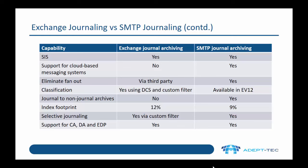One of the issues with exchange journal archiving is that you get something called fanout, where you get duplicate emails because emails are being sent from multiple mailbox servers. Because of the architecture of SMTP journal archiving, we can eliminate fanout without any requirement for a third party product.